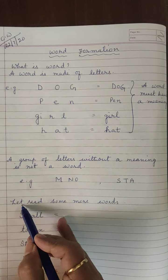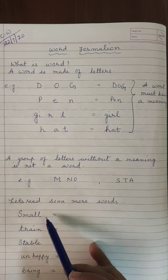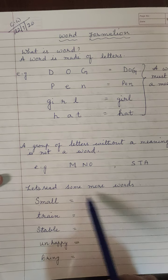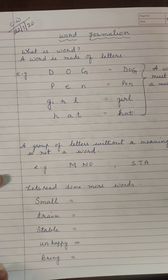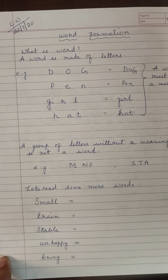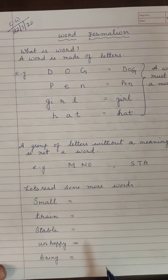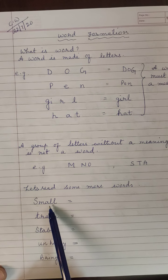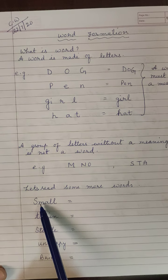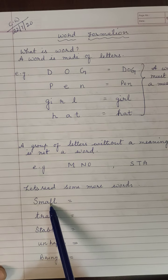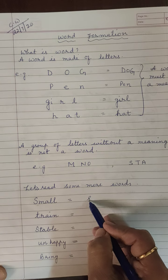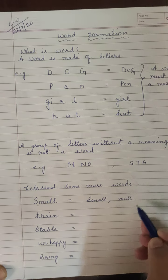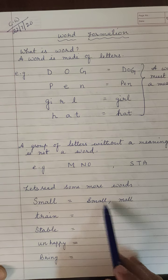Let's read some more words. Here are some words I have written. We have to form words with the help of all these letters. First one is 'small' — S, M, A, L, L. Small means tiny. With these 5 letters we can make 2 words. The first one is 'small'. Another word we can make is 'mall' — shopping malls are there. So 2 words we are getting from these 5 letters.